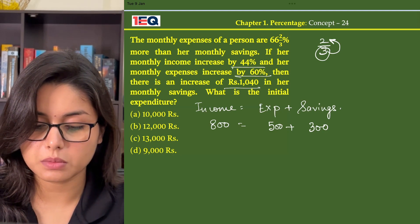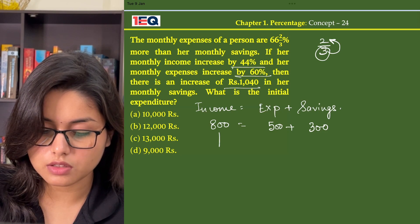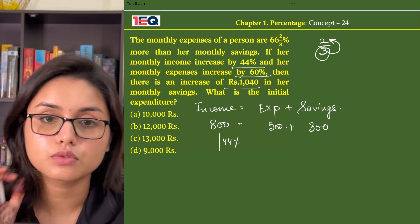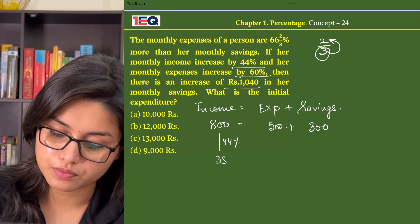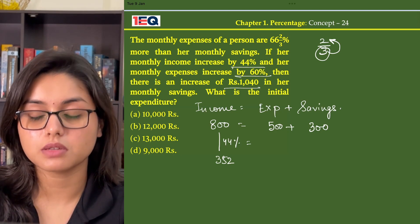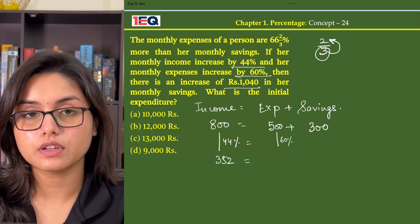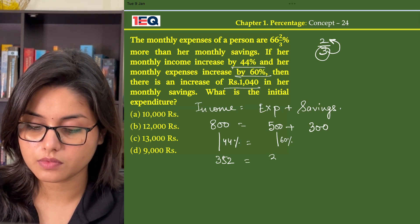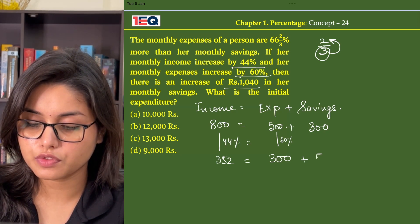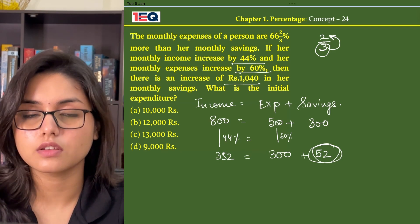The question says that if her monthly income increases by 44%, so 800 will increase by 44%. 44% of 800 is equal to 352. And then if her expenses increase by 60%, 60% of 500 is equal to 300. So the net increase in savings is 352 minus 300, which is equal to 52.